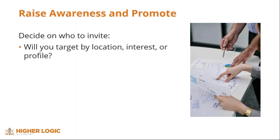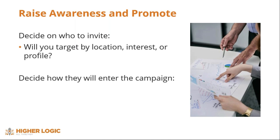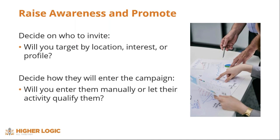First and foremost, we need to decide who is actually going to be on the invitation list. We could invite everyone, or we could choose to invite only people who live near the event, or we could focus on people who have shown interest in topics that will be covered. Then we need to pick one of the many ways to add the right people to the campaign, and your options may also depend on which features you have turned on in your marketing automation platform.